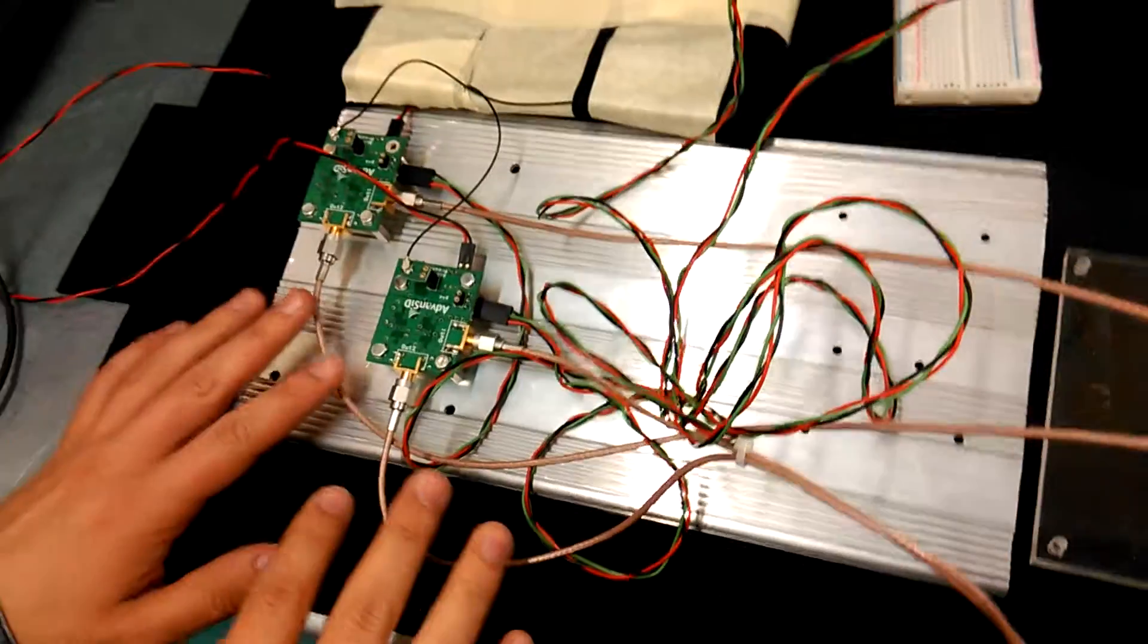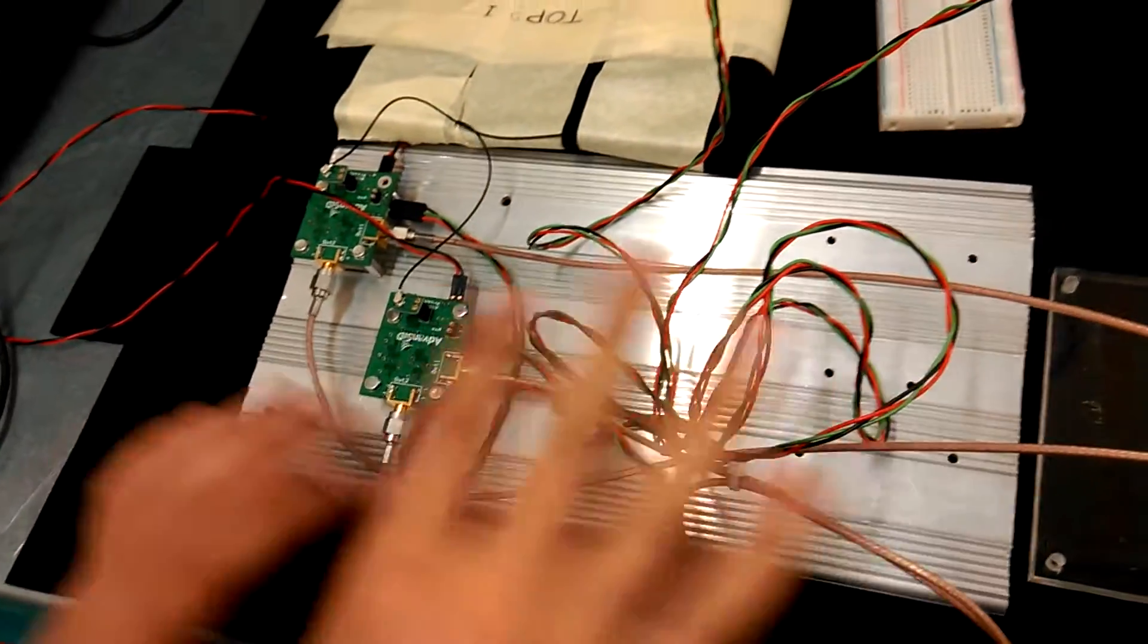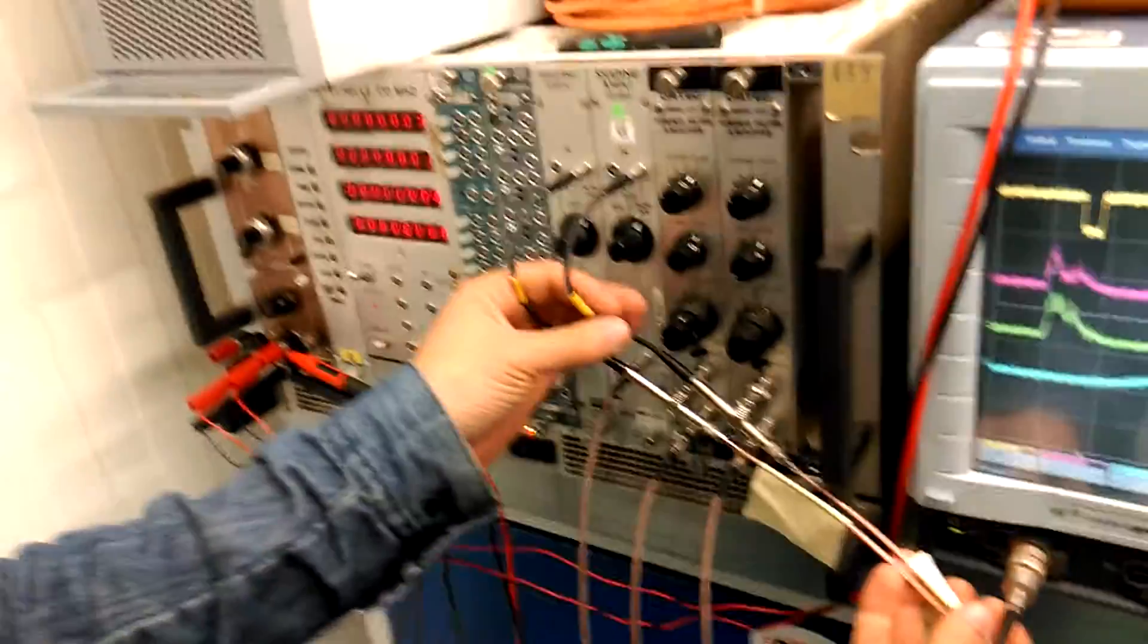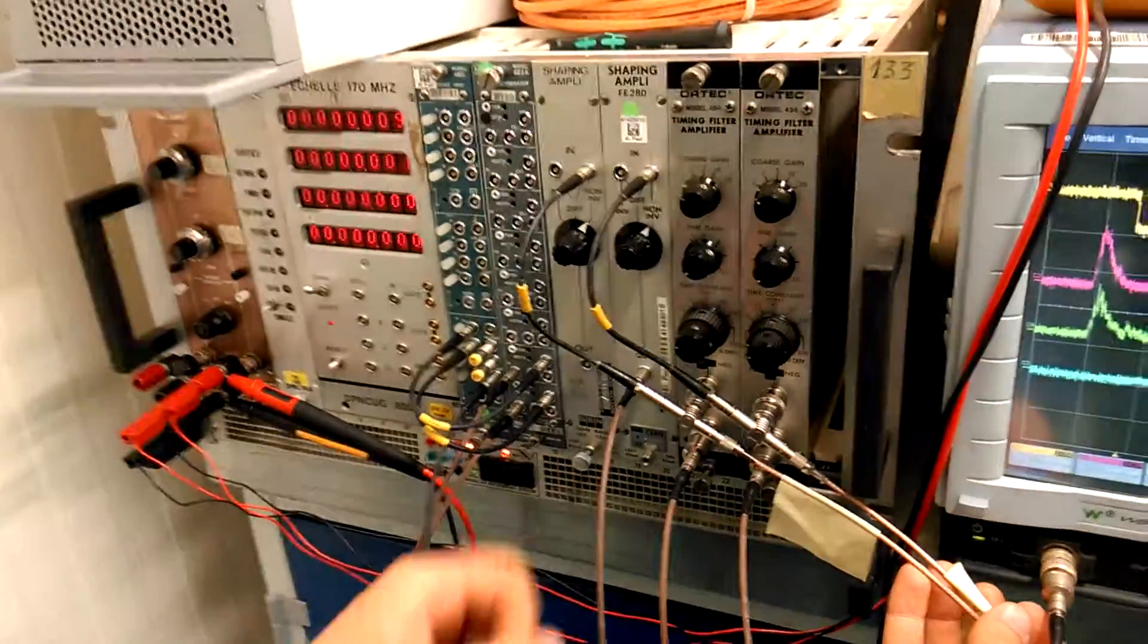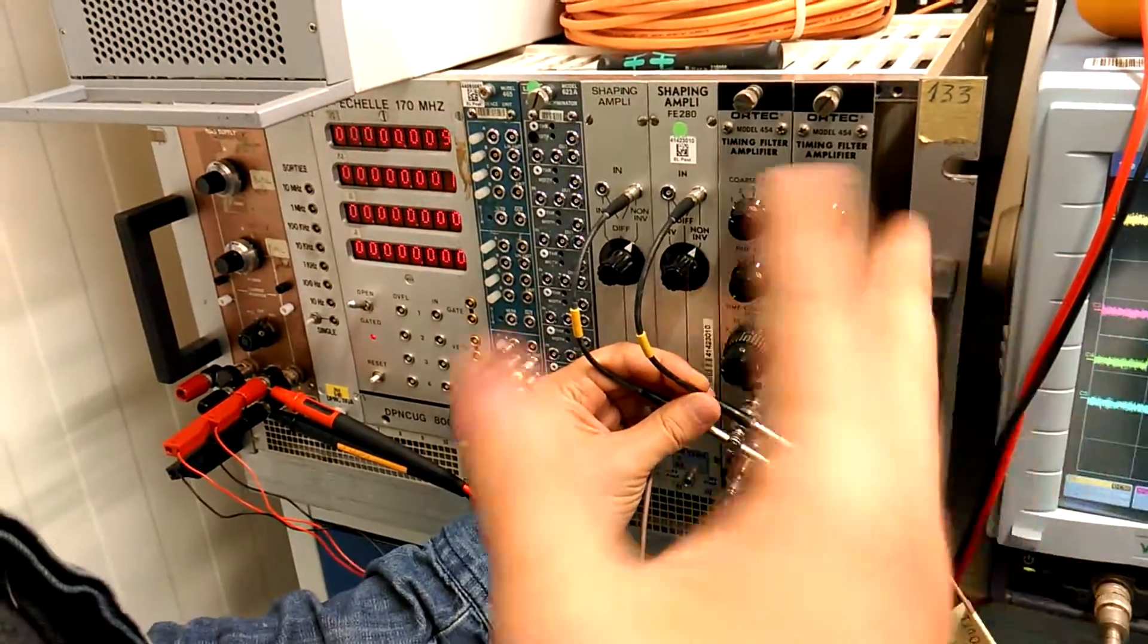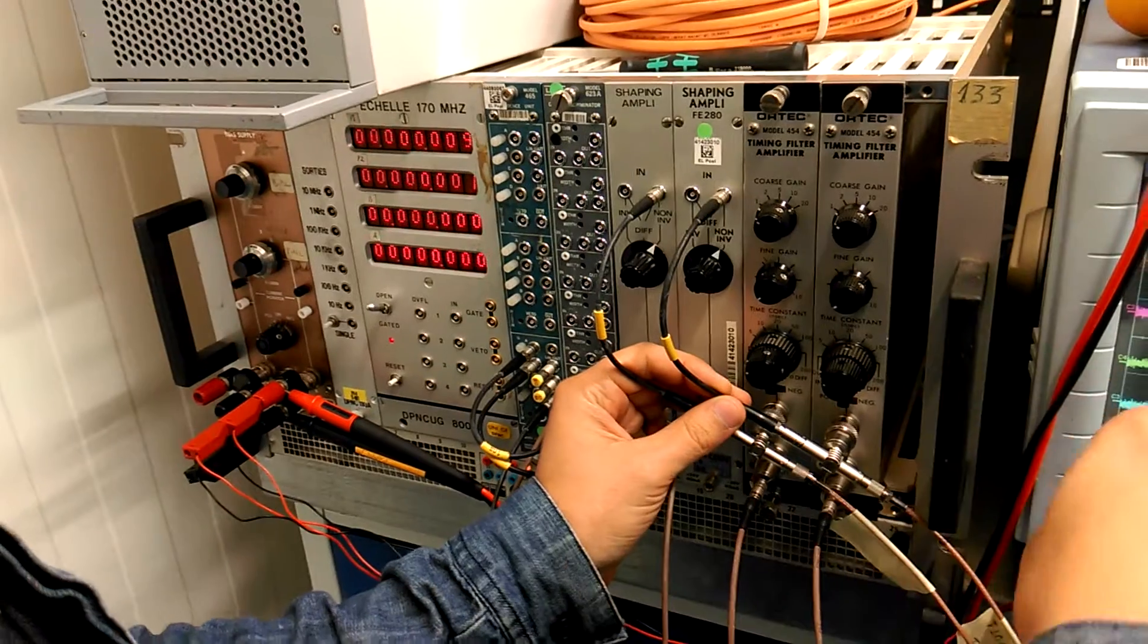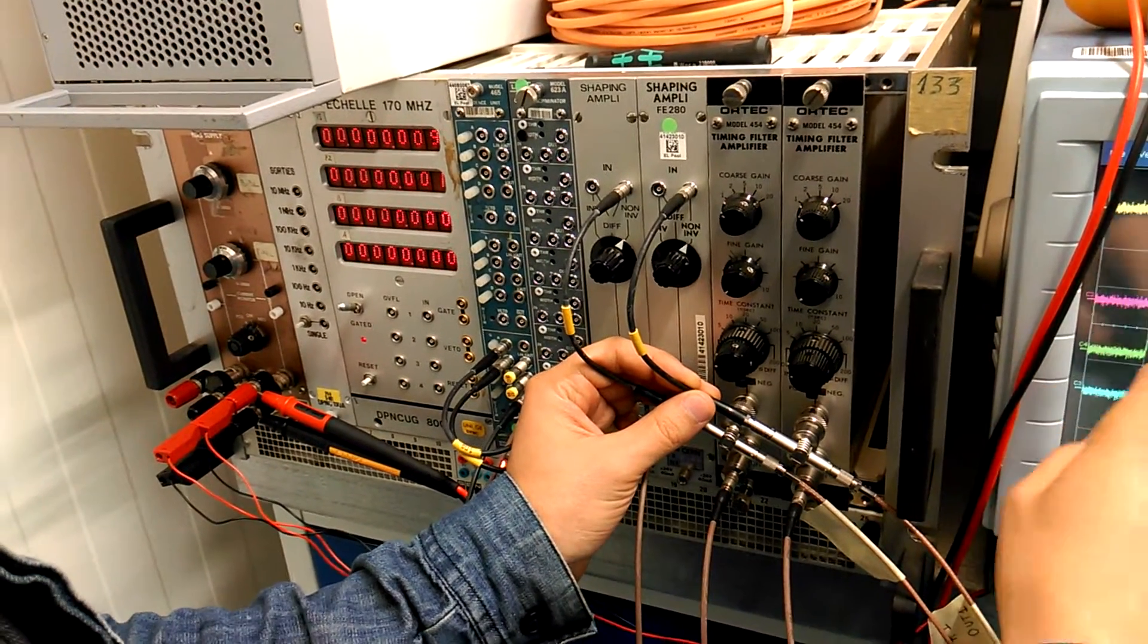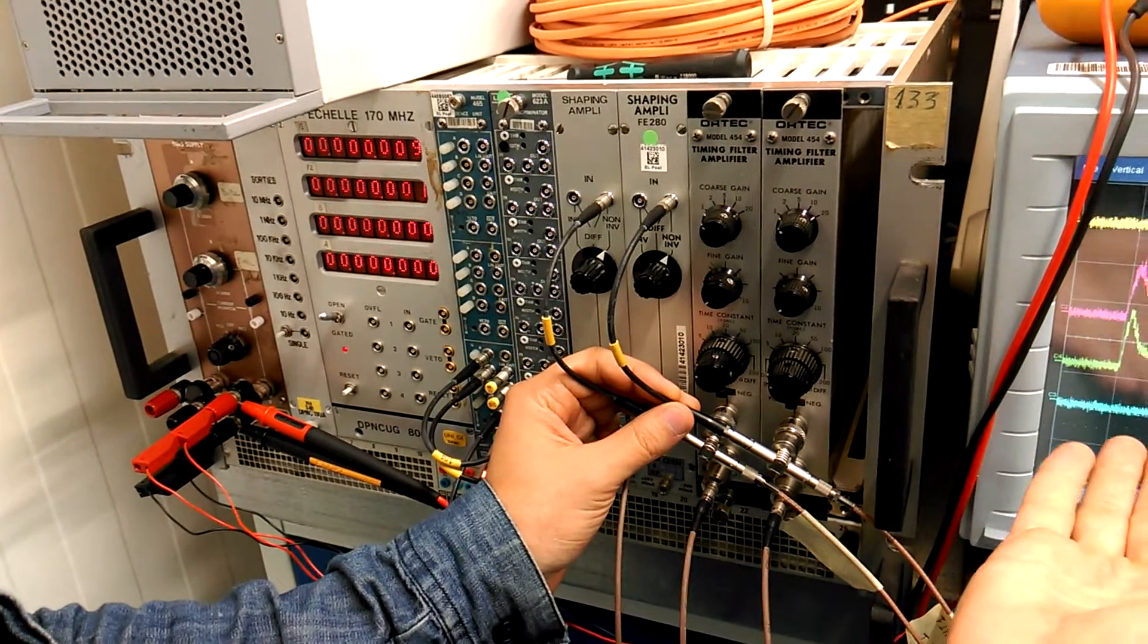We take the non-amplified signal and send it, basically these two wires, to a first module which inverts that signal. We create from that signal an inverted one, negative.